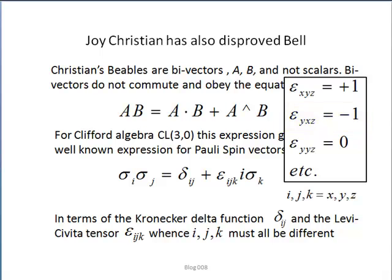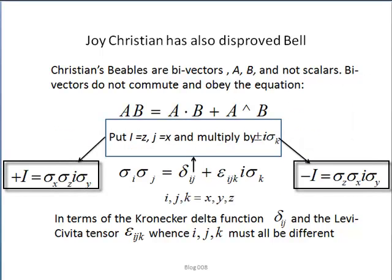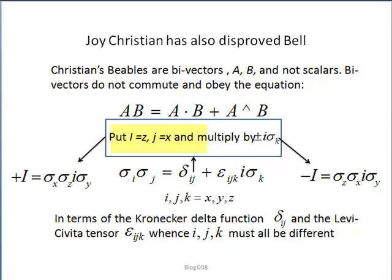This can be written as a trivector. Let us go through this quickly: put i equal to z and j equal to x. Then the first term with a delta function is zero because i is not equal to j. Then, because of the Levi-Civita rules, k must equal y.